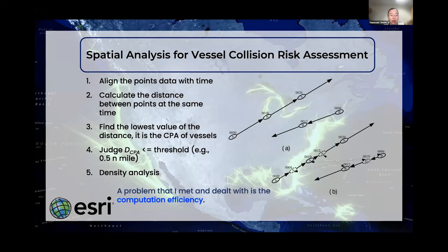The model first aligns the point data of the vessel trajectory with time by interpolation, aligning the location data into exactly the same time point to calculate the distance between vessels at the same time. It then finds the lowest value of the distance between the trajectories, and this is taken as the CPA between two vessels.